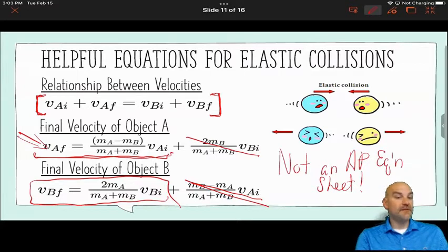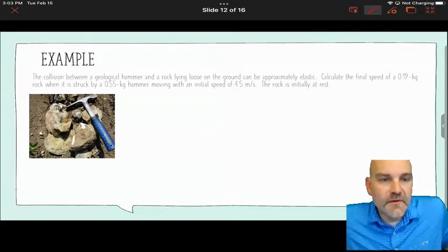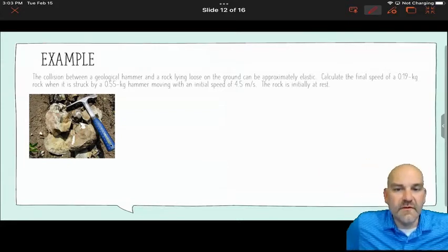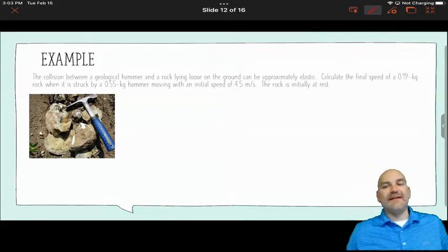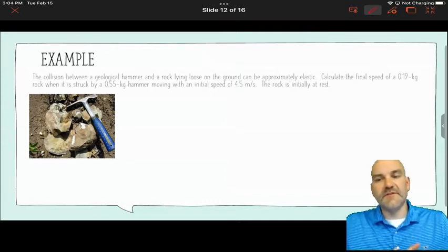If you really want to see how it's solved, the algebra is about a page and a half worth. We can do that, okay? All right. So next, here's an equation. A collision between a geological hammer and a rock lying loose on the ground can be approximately elastic.